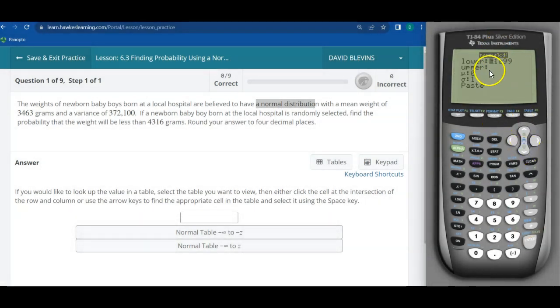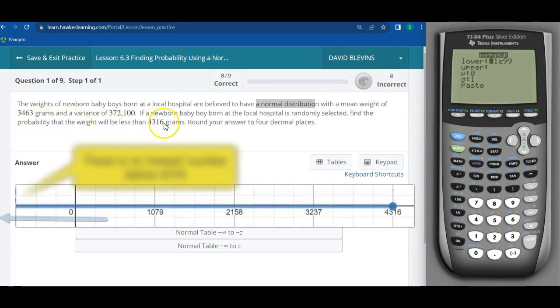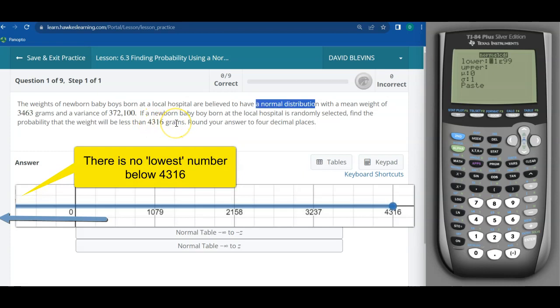All right, and then it wants to know what's my lower number, what's my upper number. Find the probability the weight will be less than 4316 grams.